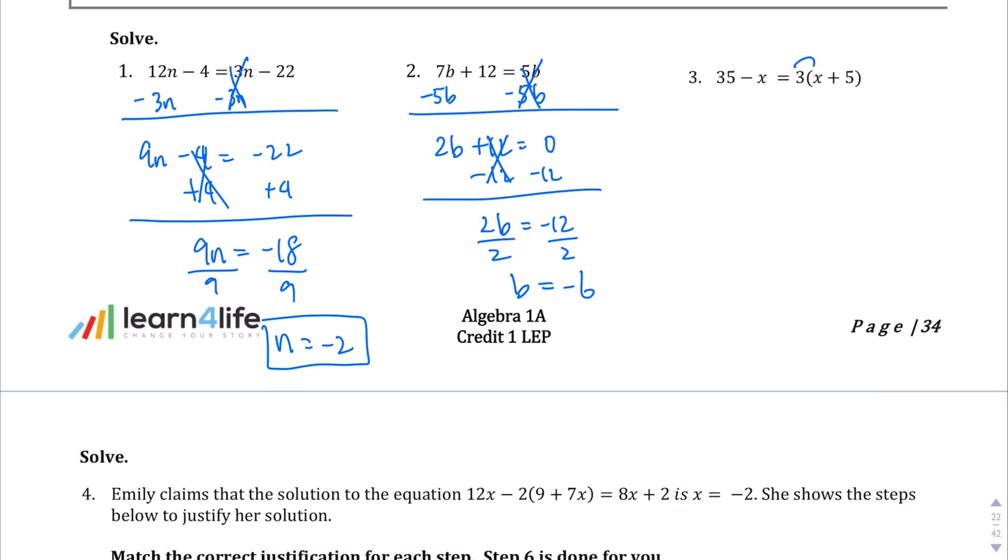Question number 3. Let's go ahead and distribute this first so we can expand this out a little bit. Left-hand side is exactly the same. After we distribute the 3, we get 3x plus 15. Let's move the smaller variable, which is that negative x there. I'm going to add x to both sides. This goes away. 35 is equal to 4x plus 15. I'm going to subtract 15 from both sides. And what I'm left with is 20 equals 4x. You should be able to do that in your head, but just in case, divide both sides by the coefficient of 4 and you should get 5 equals x.